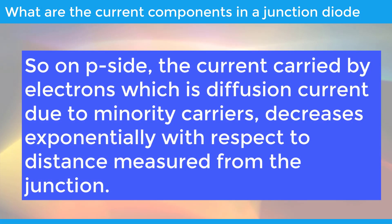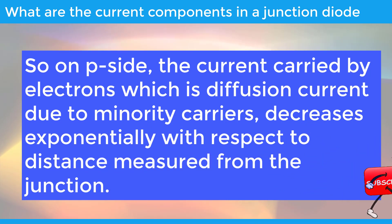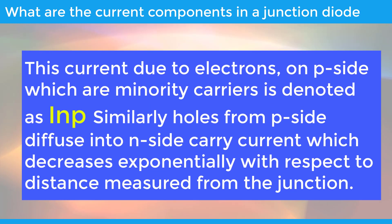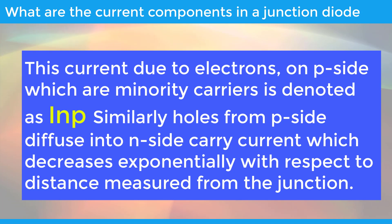On the P side, the current carried by electrons, which is diffusion current due to minority carriers, decreases exponentially with respect to distance measured from the junction. This current due to electrons on the P side, which are minority carriers, is denoted as INP. Similarly, holes from the P side diffuse into the N side, carrying current which also decreases exponentially with respect to distance measured from the junction.